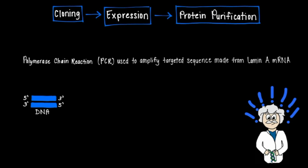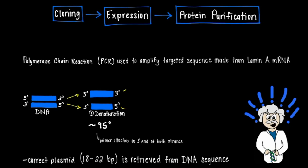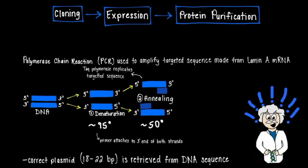By using a plasmid editor, a free-to-use program, the correct primer from 18 to 22 base pairs long was retrieved from the DNA sequence. The DNA is then heated and denatured, allowing the primer to attach to the three prime end of both strands. The primer then allows the TAC polymerase to replicate the targeted sequence. This replication is known as annealing, or creating the corresponding gene strand to the targeted sequence.